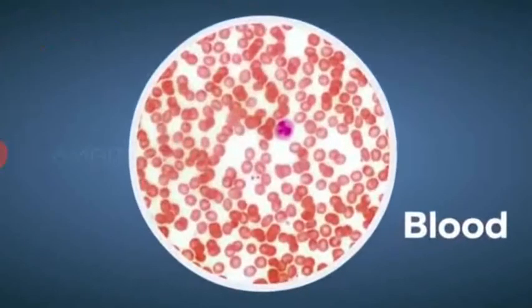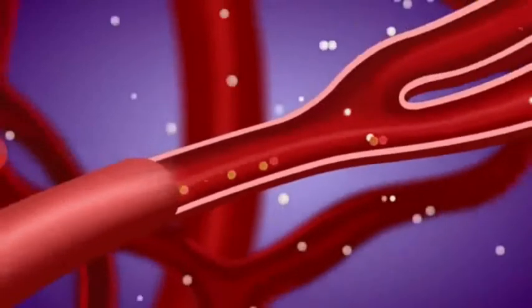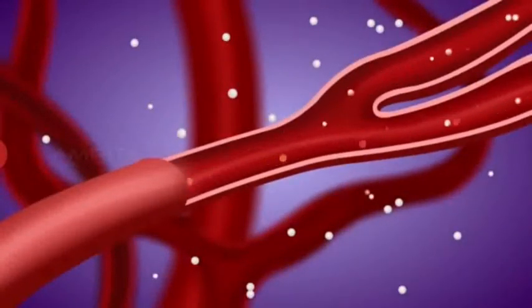The blood contains RBC, WBC, and platelets that transport gases and other materials to different parts of the body. Blood has a fluid matrix.